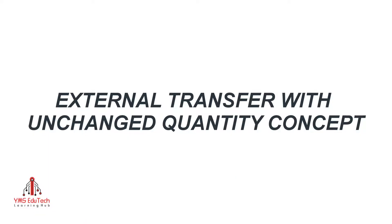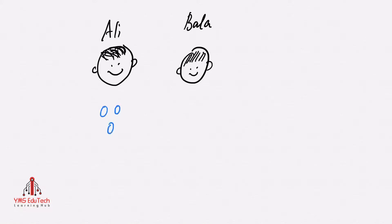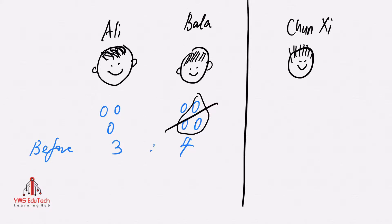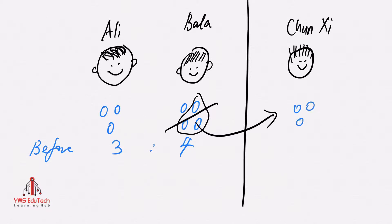Word problems categorized under this concept involve changes that take place externally. For example, Ali and Bala have some number of marbles in a certain ratio. Bala gave away some marbles to Chunsi, and Chunsi is an external party. The ratio of the number of Ali's marbles to Bala's marbles changed.